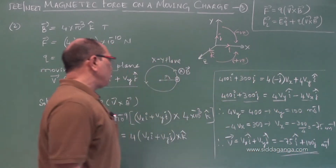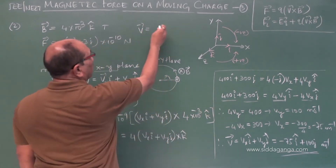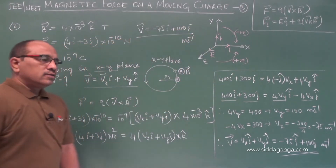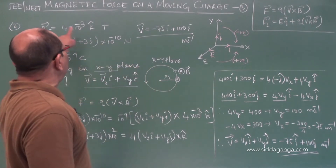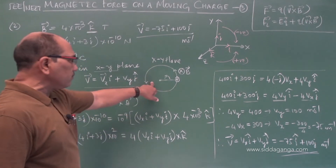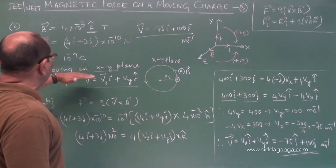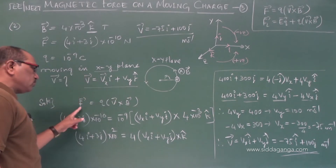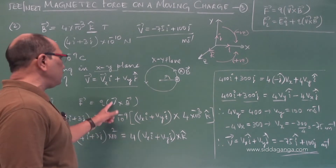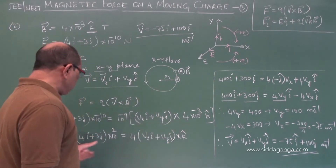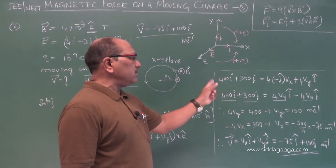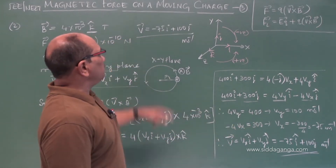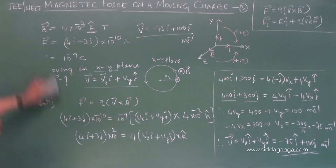Therefore, the velocity V = Vx·I + Vy·J = −75I + 100J m/s. This is the answer. The velocity is acting perpendicular to the magnetic field, and the circle is described in the XY plane. We split V into X and Y components, used F = Q(V × B), simplified using vector algebra, compared I and J components to get Vy = 100 and Vx = −75, then substituted for the final answer.